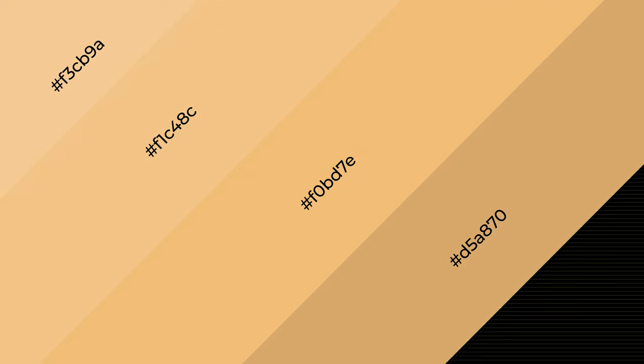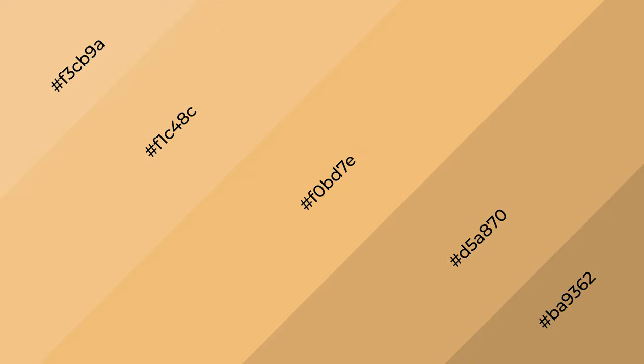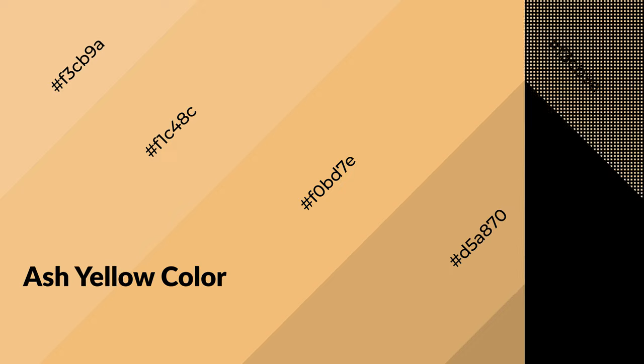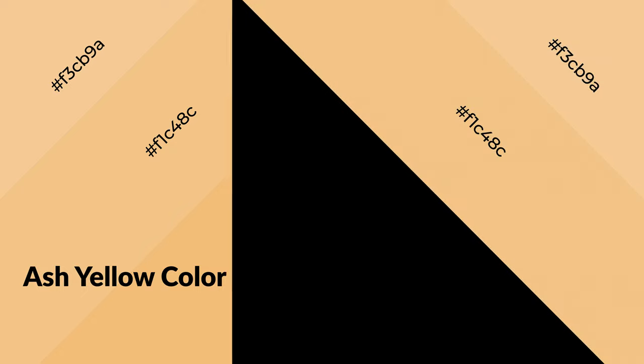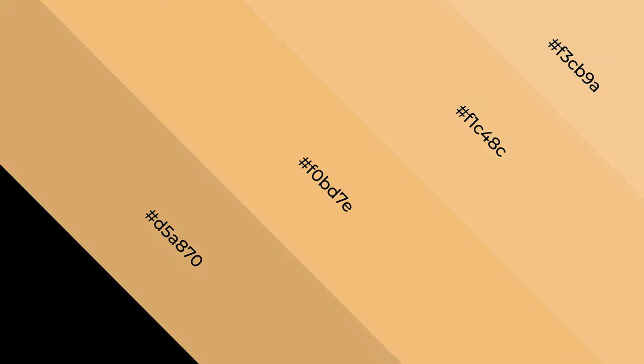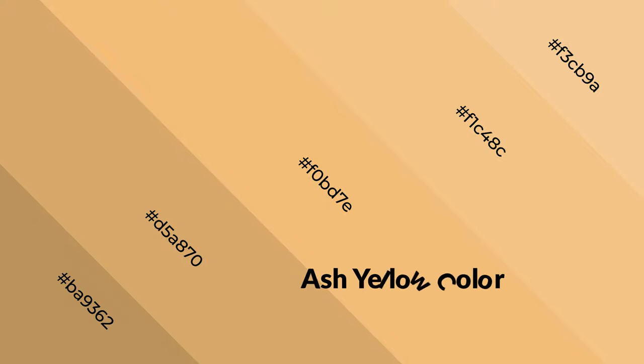Ash yellow is a warm color and it emits cozier and active emotions. Warm colors are symbols of warmth, fire, heat, and sunshine. They also evoke joy, passion, love, and even anger. You can see them used in restaurants and gyms.